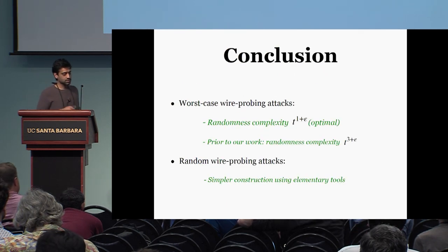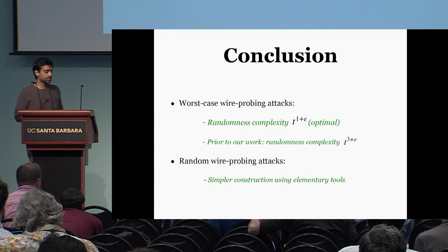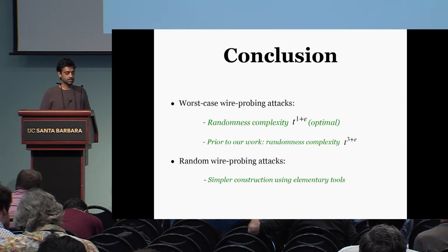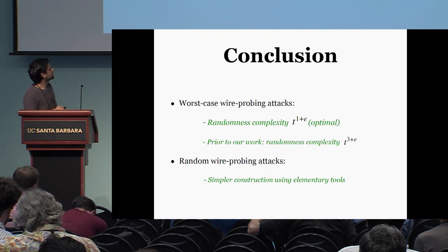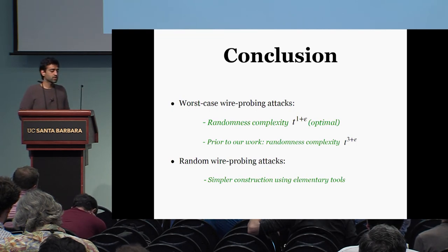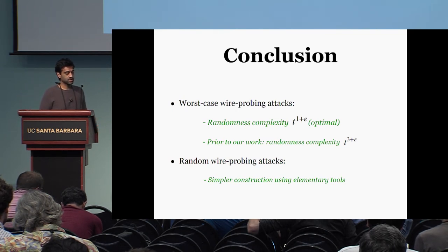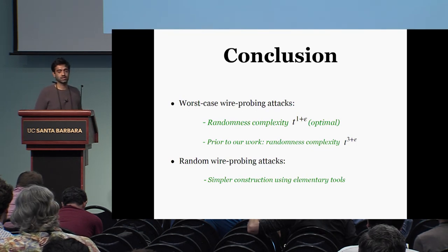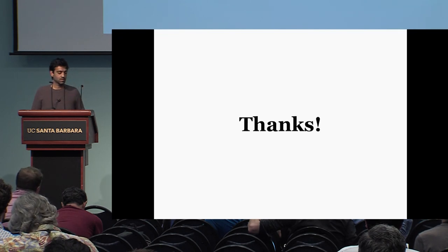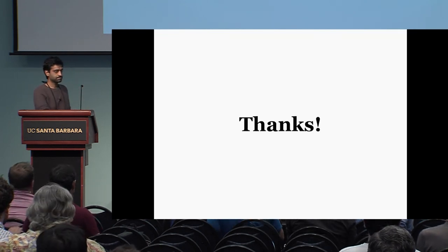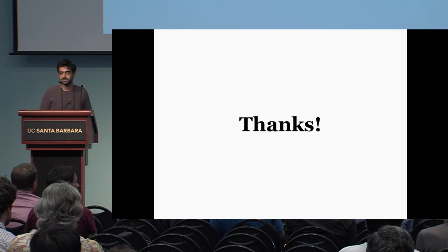To conclude: we get results in both the leakage-resilient and leakage-tolerant settings. In both settings we consider two types of attacks — worst-case wire probing attacks and random wire probing attacks. For worst-case wire probing attacks, we get an optimal randomness complexity result, and for random wire probing attacks, we get a construction that is significantly simpler than prior works. Thank you.